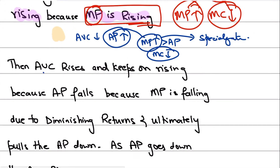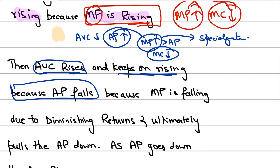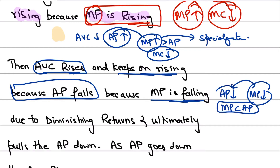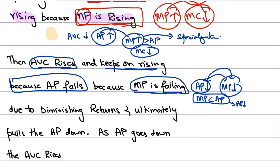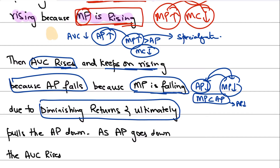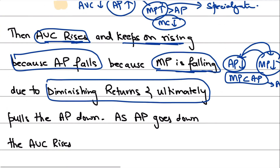After a certain point, average variable cost rises and keeps rising because average product is now falling. Average product is falling because marginal product is falling. When marginal product goes down, a certain point comes when your marginal product becomes less than the average product — and that brings the average product down. The marginal product is falling due to diminishing returns. Diminishing returns worsen and the marginal product falls at a faster rate, becoming less than the average product and bringing average product down. When average product goes down, your average variable cost rises.